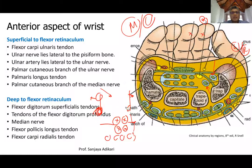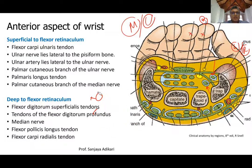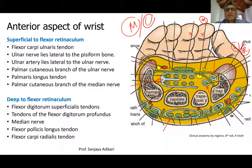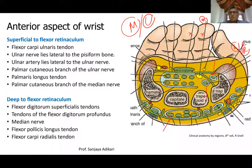You can get a lot of information from this diagram. The long flexor tendons are covered by synovial sheaths, indicated by the blue line. For flexor digitorum profundus and superficialis tendons, there is a common synovial sheath at the wrist. Flexor pollicis longus has a separate synovial sheath, and flexor carpi radialis also has a small separate synovial sheath.